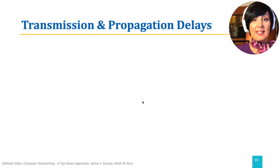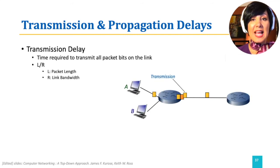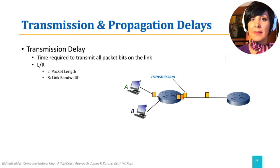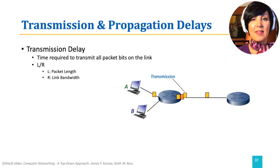Transmission delay is the time required to transmit all of the bits in a packet onto the link. If the packet length is L bits and the link rate is R bits per second, the transmission delay will be L over R. This is because the time to transmit one bit is 1 over R, and for L bits the total is L times 1 over R, which equals L over R.